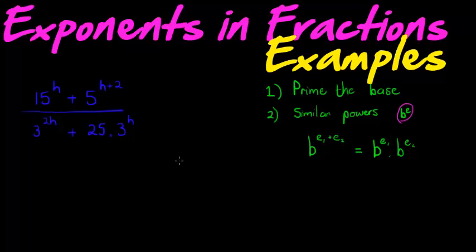If we can't already cancel common factors, try to get similar powers so that in our third step we can factorize. So I should have actually changed this to common powers—find, create common powers.